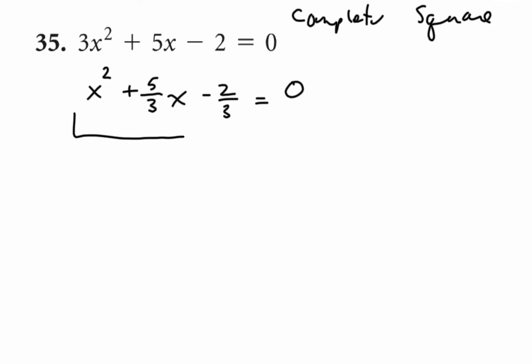Now I want to isolate these two terms here. So I'm going to move this 2 thirds to the other side. So it'll be x squared plus 5 thirds x equals 2 thirds.